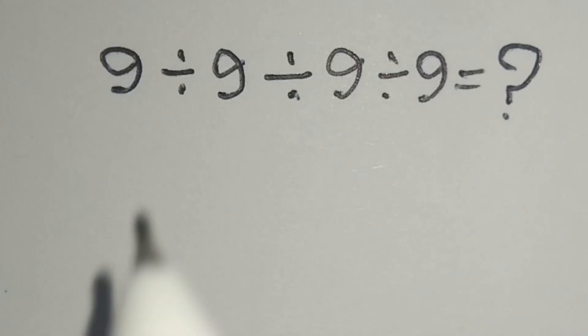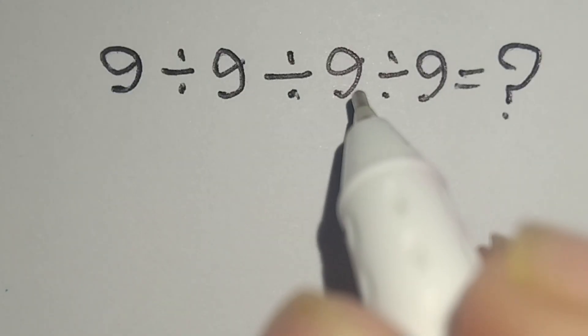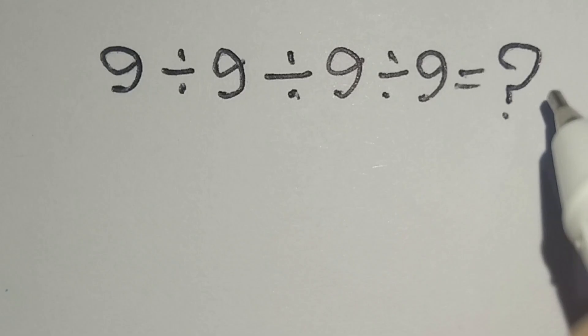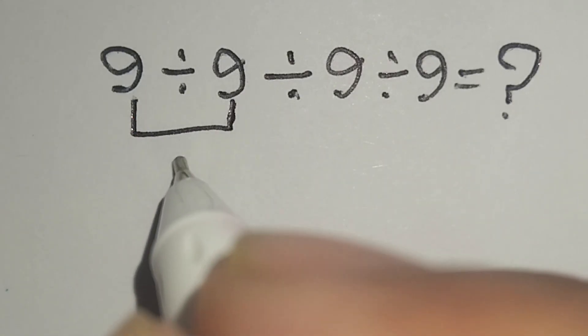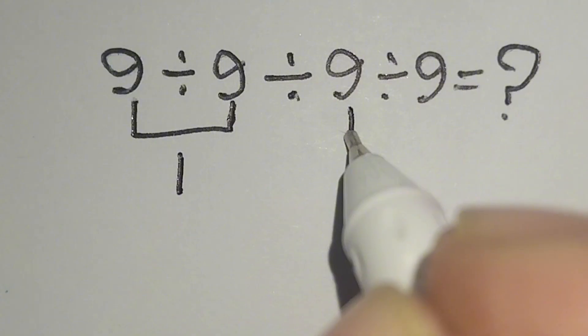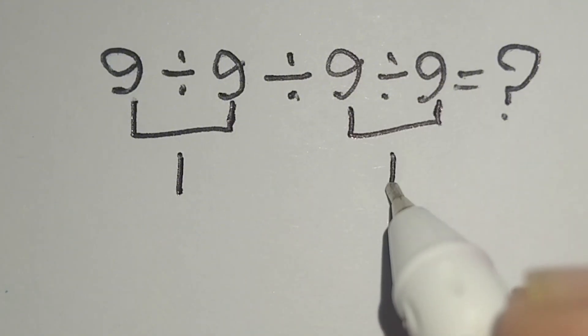Hi guys, this is a nice math problem: 9 divided by 9 divided by 9 divided by 9 equals what? Here, this 9 divided by 9 gives us 1, and this 9 divided by 9 gives us 1.